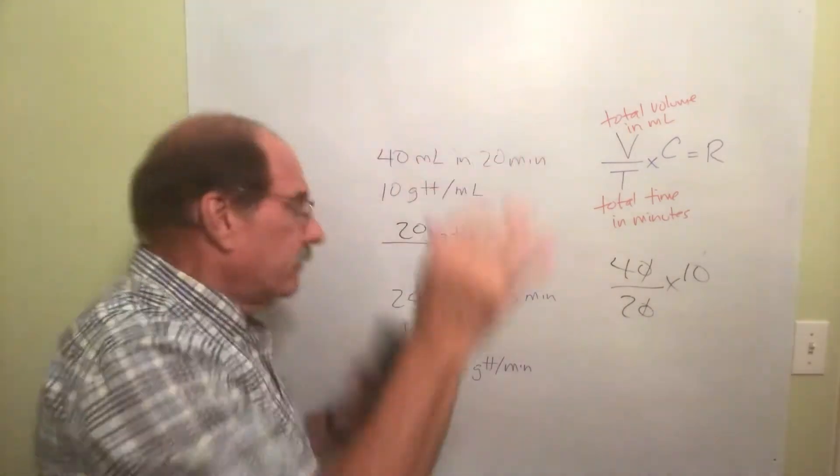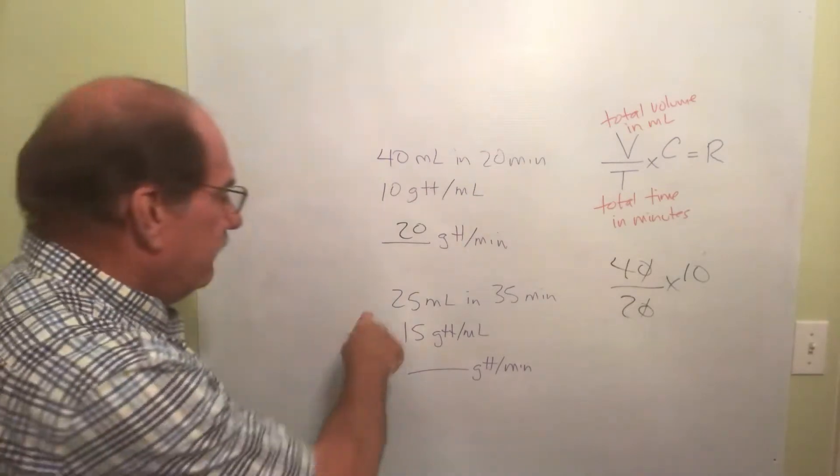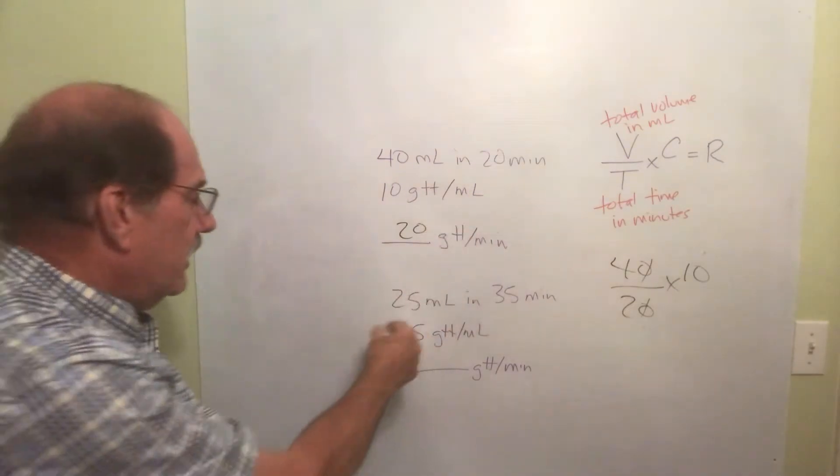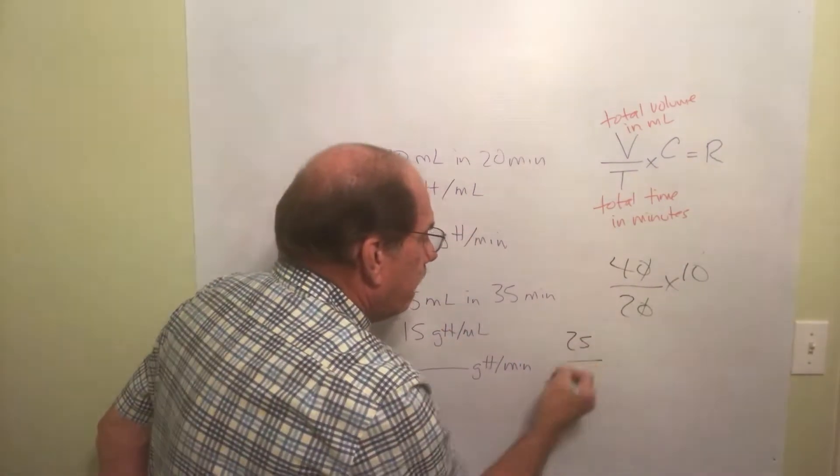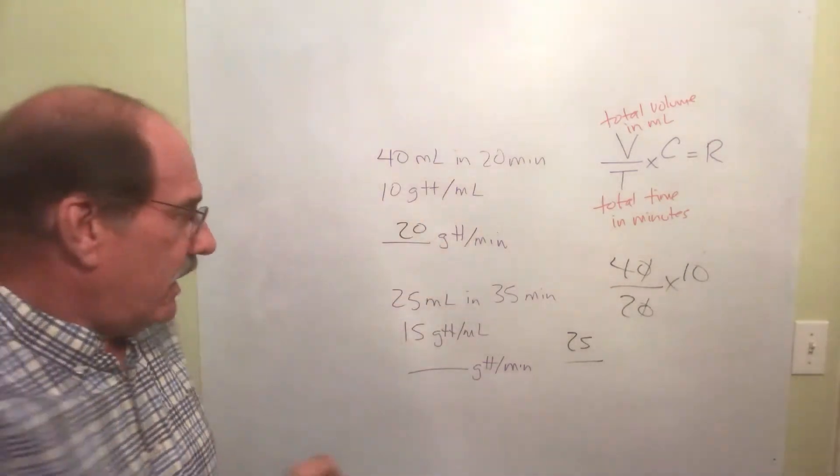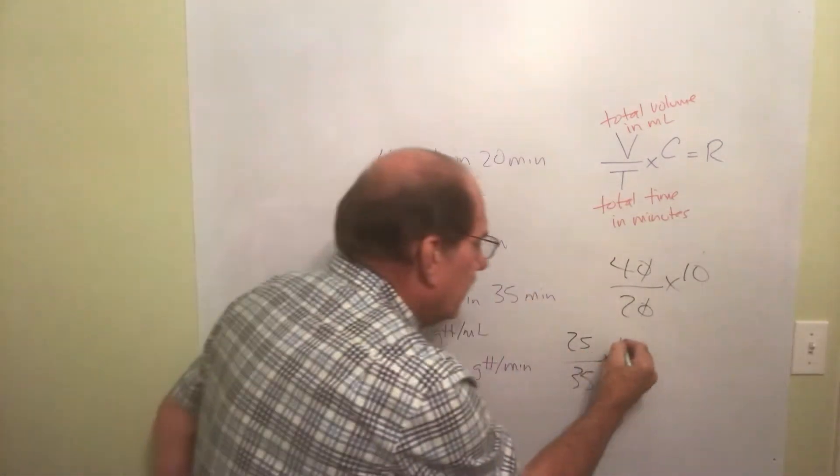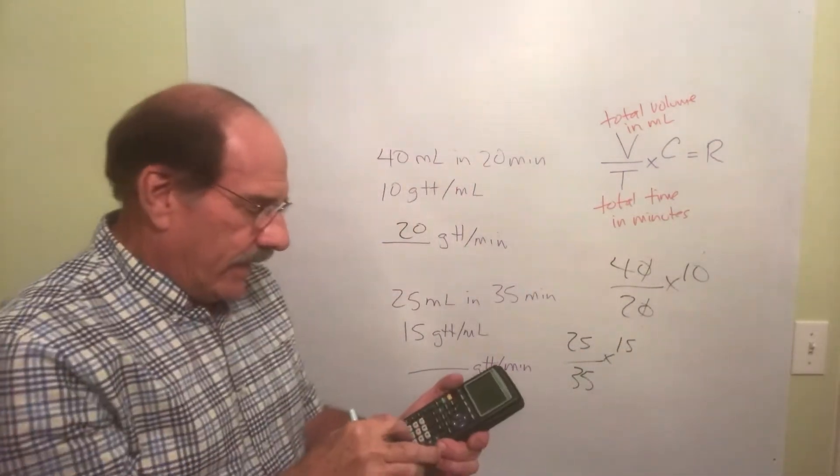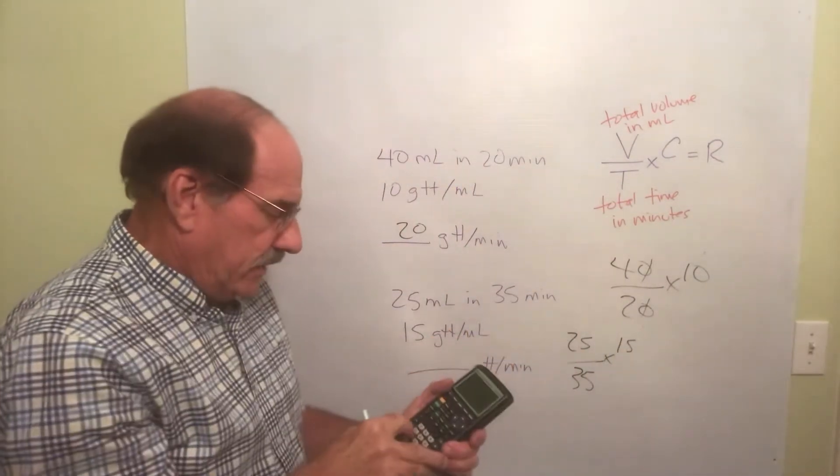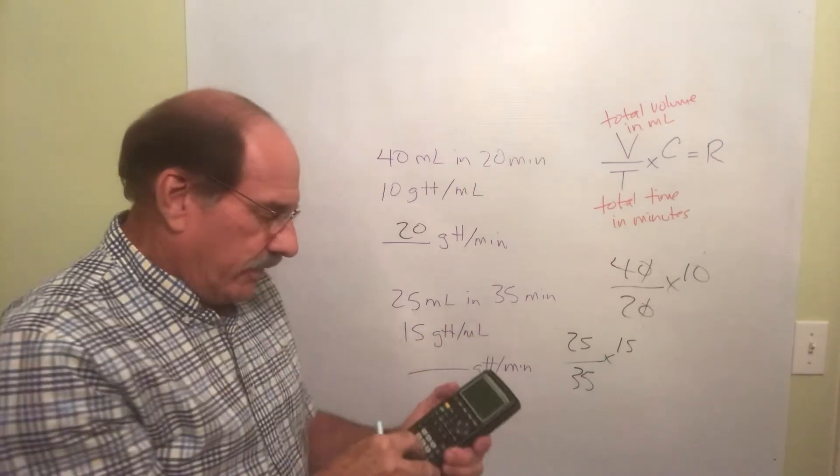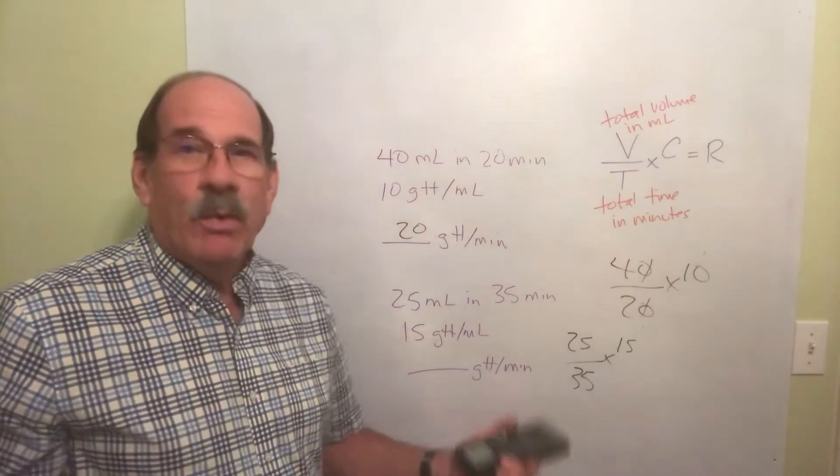Let's go real fast. Quick like a bunny rabbit. Okay. Total volume 25. Divided by the total time in minutes 35. Times the drop factor of 15. 25 times 15 divided by 35. The answer is 10.7.